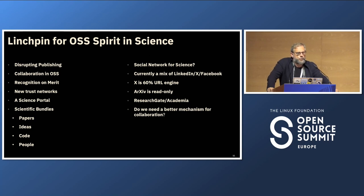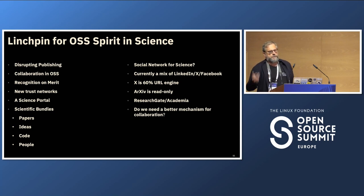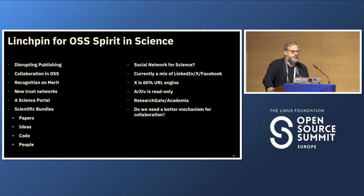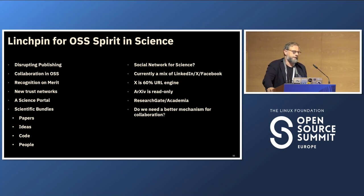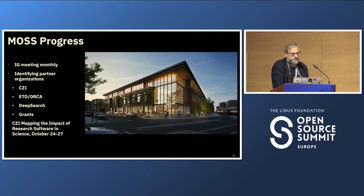This should be a living and useful portal, not a PDF or a one-time research project. When we started we were very ambitious — we thought we'd need to build a portal for science, because there is no social network for science. Scientists exchange information through LinkedIn and Twitter. Twitter is a machine for URL exchange — 60% of scientific tweets contain a URL. We thought of things like a scientific bundle where you could put together papers, ideas, code, and send it to other people.